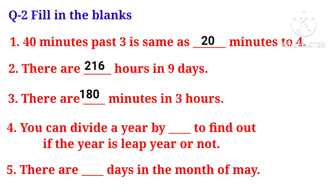You can divide a year by dash to find out if the year is leap year or not. Which is the number you can divide by? It is 4. If it is divided completely, it is a leap year. There are dash days in the month of May. May has 31 days.